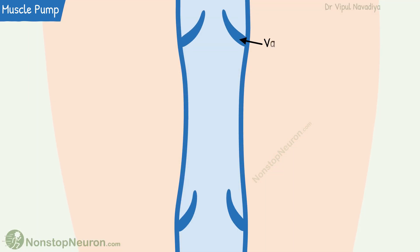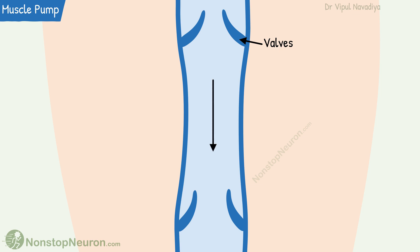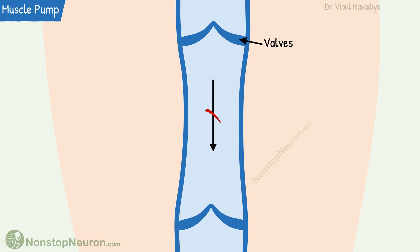Many veins in our body have valves. These valves are arranged in a way that allows the blood to flow only toward the heart. If blood tends to flow back, the valves close and prevent the back flow.